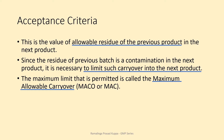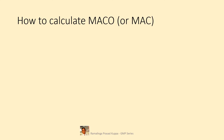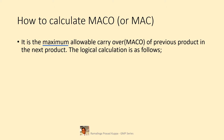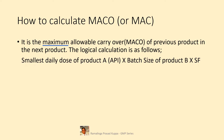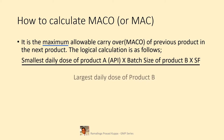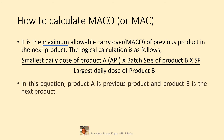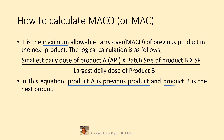This is important. MACO means Maximum Allowable Carryover, and it is reported in milligrams — always measured in milligrams. Let us see how we calculate the MACO values. It is the maximum allowable carryover of the previous product in the next product. The logical calculation is: smallest daily dose of product A multiplied by batch size of product B multiplied by the safety factor, divided by the largest daily dose of product B. In this equation, product A is the previous product and product B is the next product.